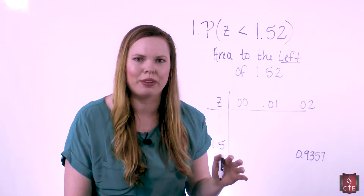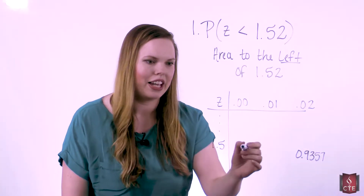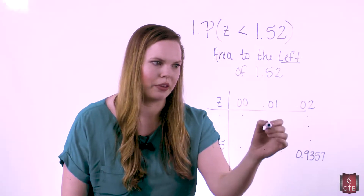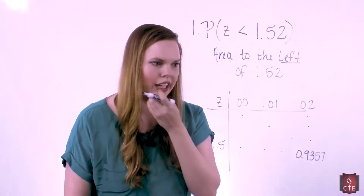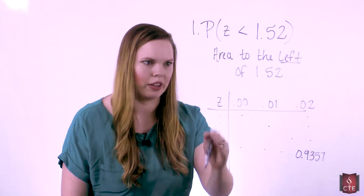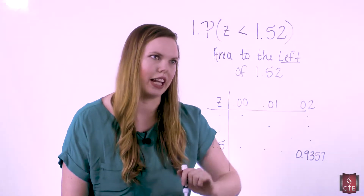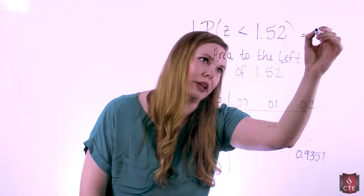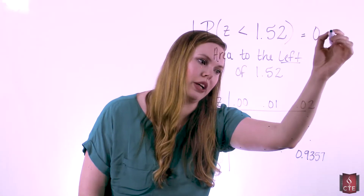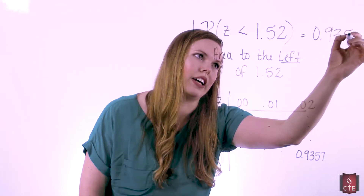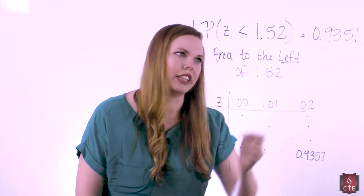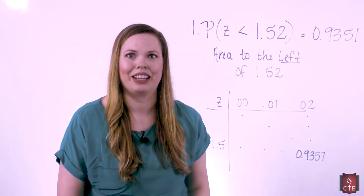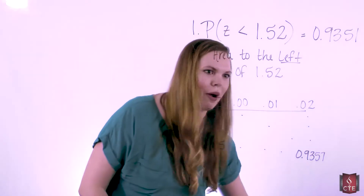You're using the table to find this by looking across and down at the corresponding values. The values in the table are areas to the left, and since we want the area to the left, the answer is simply .9357.